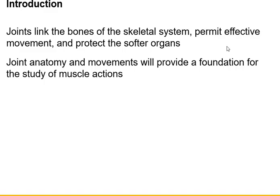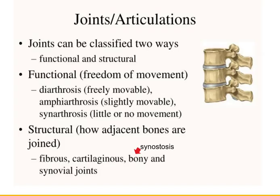The word for joints is articulation, so we're going to talk about different kinds of articulations. You can look at joints by their function — the freedom of movement they have. The functional classification includes diarthrosis, which are freely movable, so think about your shoulders and hips. Amphiarthrosis is slightly movable, and synarthrosis means no movement — you don't want those joints moving.